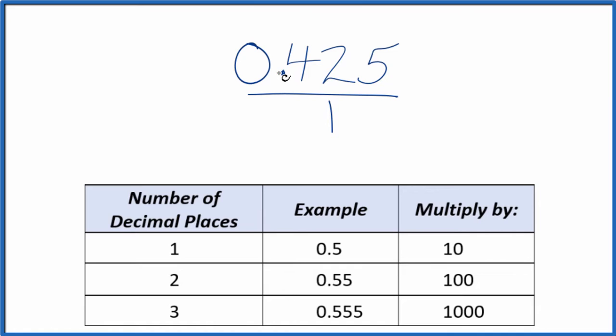I can see that there are 1, 2, 3 decimal places. So with 3 decimal places, if I multiply this by 1,000, that'll give me a whole number. So 1,000 times 0.425, that equals 425.